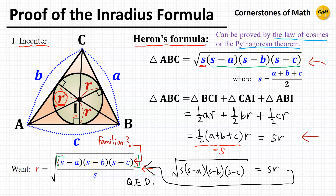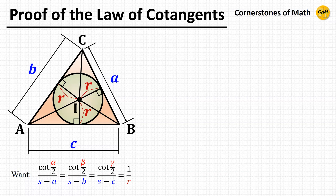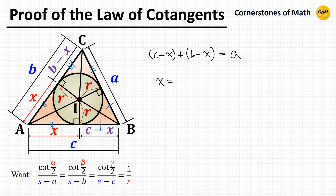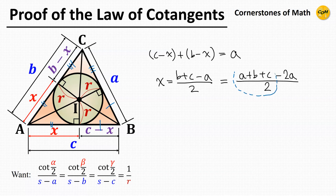So now that we have proved the in-radius formula, let's move on to the proof of the law of cotangents. You may have learned from a basic geometry course that certain tangent lengths from the vertices to the points of tangency on the incircle are equal. Our first interest is this length, which we will denote as X. Then one adjacent length is C minus X, and the other is B minus X. Since (C minus X) plus (B minus X) equals A, we get X equals (B plus C minus A) over 2, which can be written as (A plus B plus C minus 2A) over 2, and since the first part is S, we have X equals S minus A.